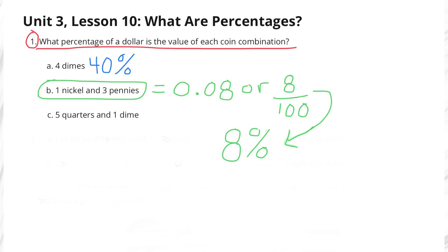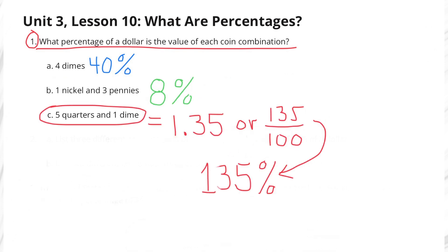C. Five quarters and one dime. Five quarters and one dime equals $1.35, or 135 hundredths, or 135%.